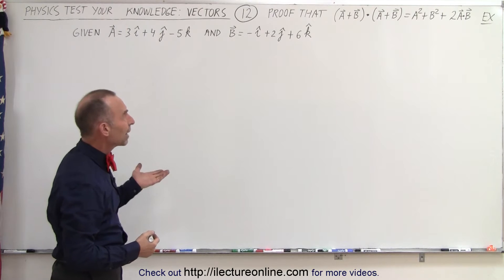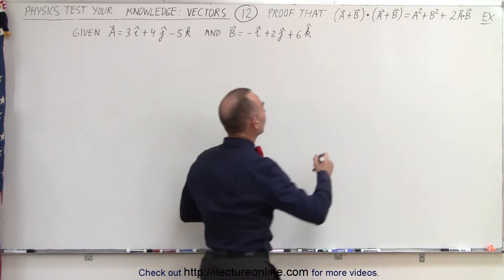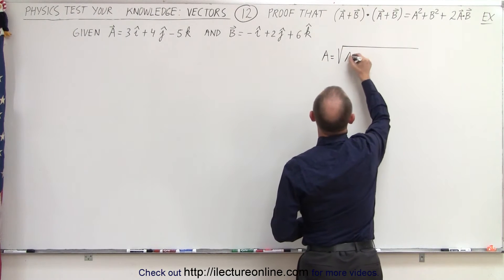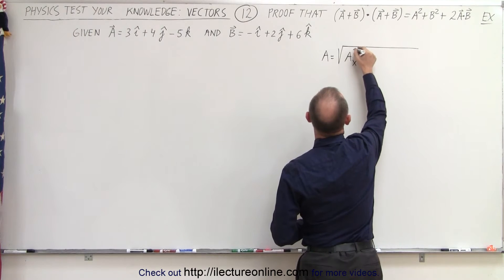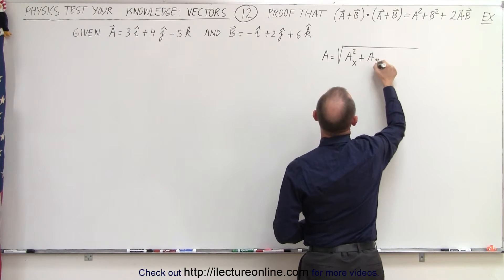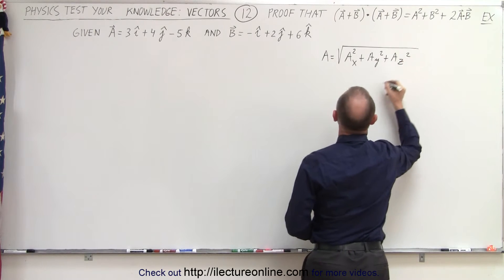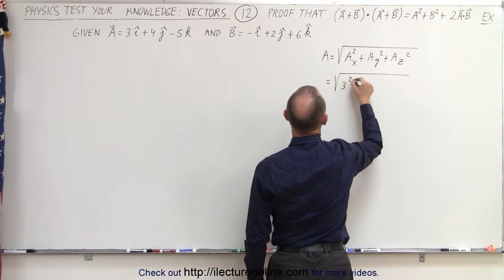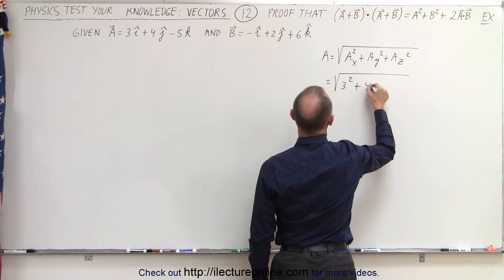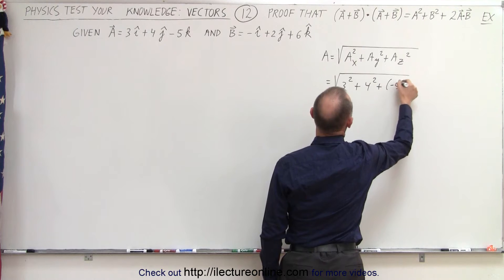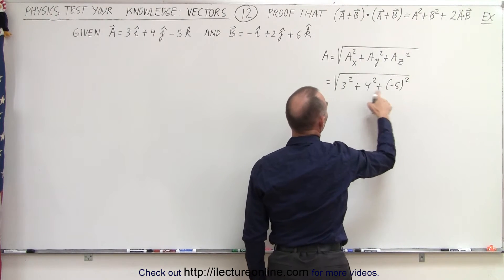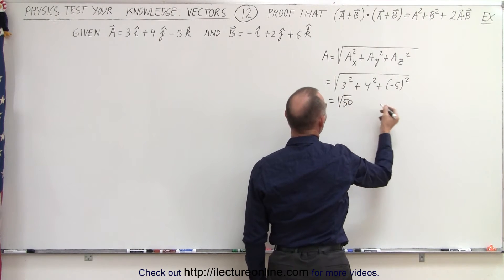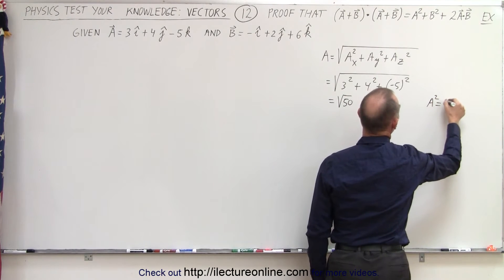So let's find the magnitude of A and the magnitude of B first. The magnitude of A is equal to the square root of the sum of the components squared: A sub X squared plus A sub Y squared plus A sub Z squared. This equals the square root of 25 plus 9 plus 16, which is the square root of 50. Therefore, A squared is equal to 50.